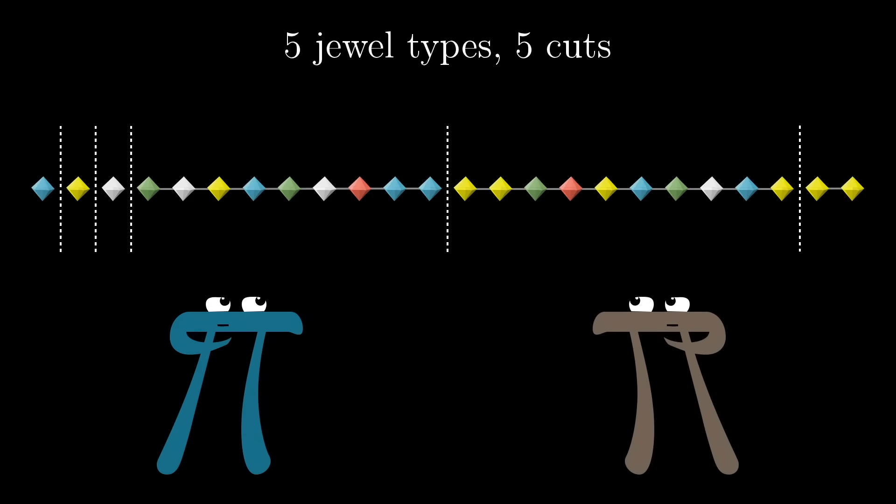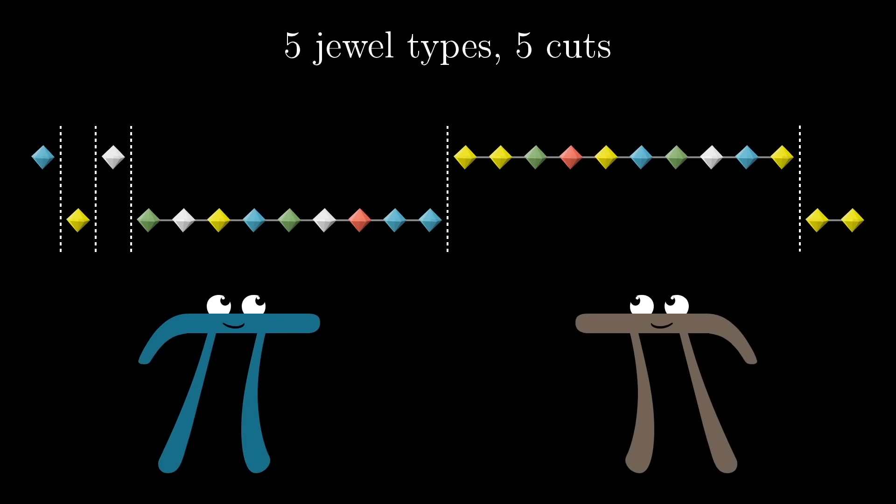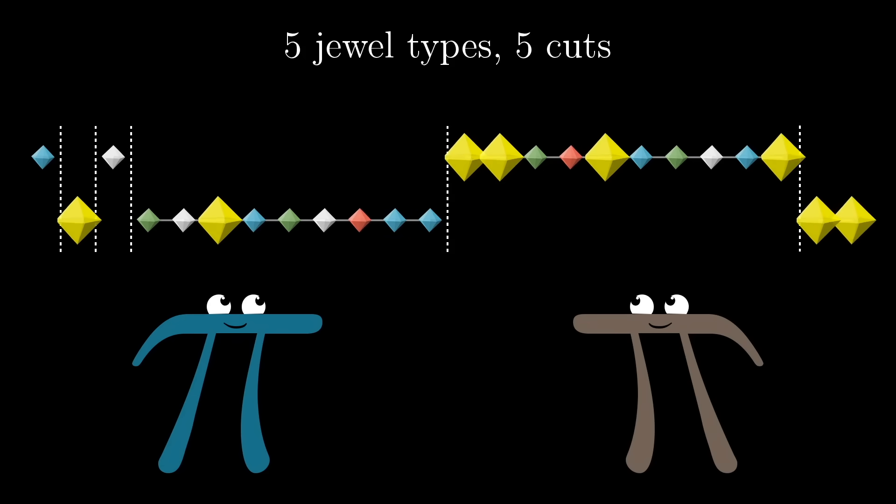With five jewel types, you should be able to do it with five cuts, no matter the arrangement, and so on. It's kind of hard to think about, right? You need to keep track of all of these different jewel types, ensuring they're divided fairly, while making as few cuts as possible.